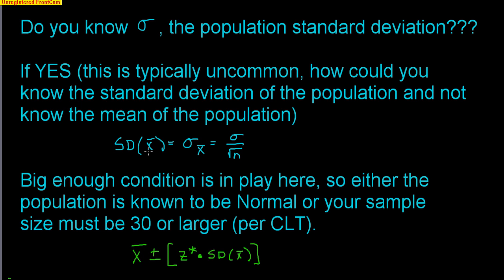If we know sigma, we can find the standard deviation of our sample — how our sample varies from other samples of the same size. We've seen this formula: the standard deviation of our sampling distribution is sigma divided by the square root of the sample size. If the big enough condition holds — either the population is known to be normal or the sample size is 30 or larger — we can use the normal model and build the confidence interval.